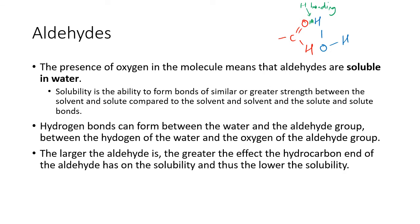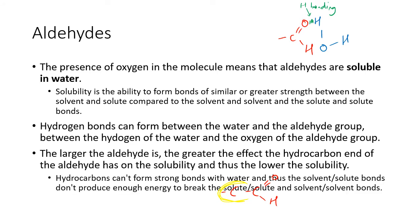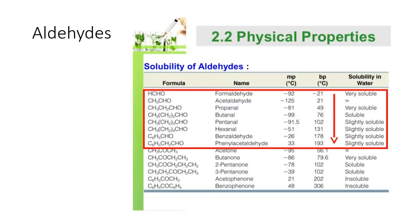The larger the aldehyde, the greater the effect the hydrocarbon end has. A long-chain aldehyde has a large hydrocarbon region that can't form any hydrogen bonds, making dissolution energetically unfavorable and resulting in lower solubility. The hydrocarbon end simply can't produce any hydrogen bonds and therefore doesn't generate enough energy to dissolve into the water.